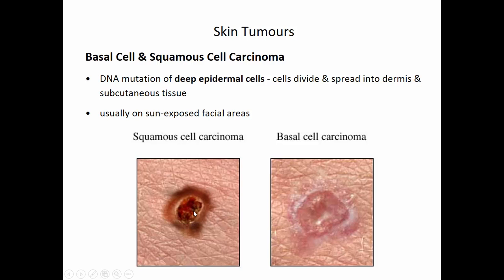Squamous cell carcinoma starts as a red scaly lesion, usually again on sun-exposed areas, but it grows much more rapidly and metastasizes to lymph fairly quickly. Any type of odd lesion that seems to be growing should be checked as soon as possible, because the earlier it's treated, the better the prognosis.